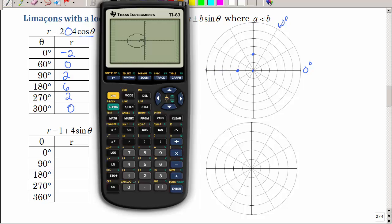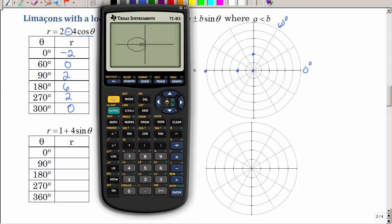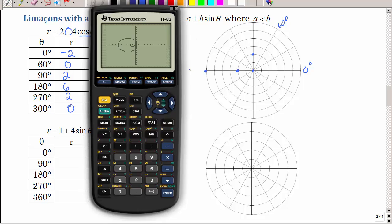All right, so let's just plot those points and see if we can duplicate this. Remember, at 0 degrees, instead of going towards 0, we're going to go backwards. So that's 0, negative 2. This is 60 degrees. We're going to be back at 0. At 90, up at 2. 180, at 6. 1, 2, 3, 4, 5, 6. Because this is 180 degrees.